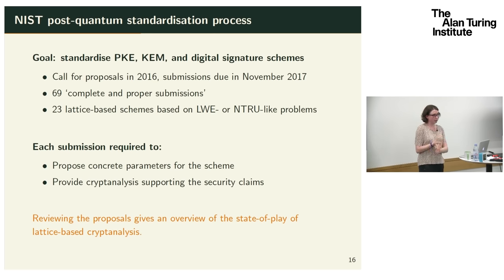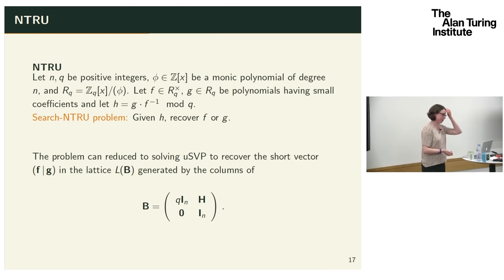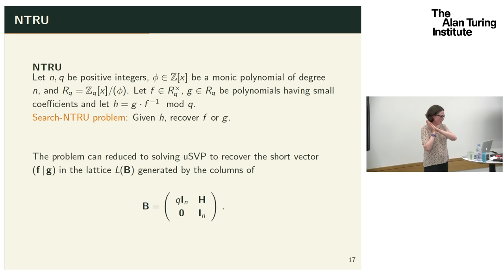The NIST submissions span several families: lattice-based, multivariate crypto, code-based, isogeny-based, and hash-based signatures. The lattice space is competitive among these, but the process will take several years. As for the NTRU problem: it's also set in a polynomial ring, you have a secret polynomial and are given a public key, and the search NTRU problem is to recover the secret key from the public key.